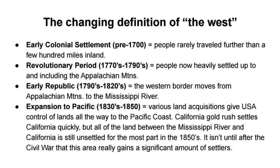Then in the early republic after the Revolution, the western border moved from the Appalachian Mountains to the Mississippi River after the British reached their 1783 Treaty of Paris settlement, granting all of the Northwest Territory up to the Mississippi River. Then you have Manifest Destiny and expansion to the Pacific. Throughout the Gilded Age, western movement picks back up again after briefly pausing during the Civil War. This is your changing definition of what is considered the West.